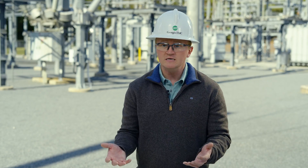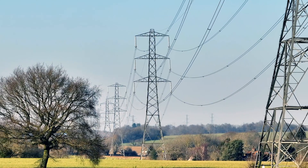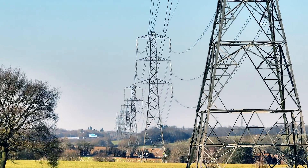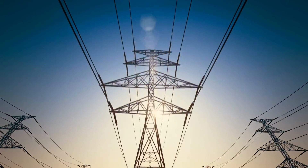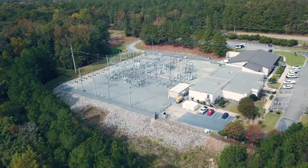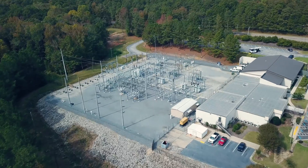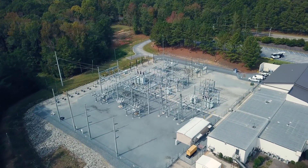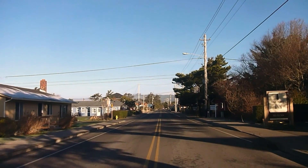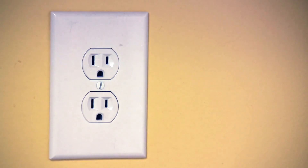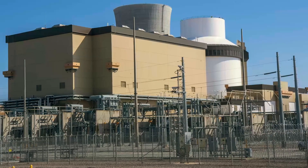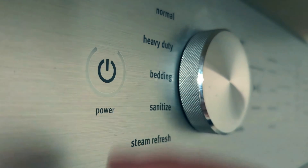When electricity is generated, it's transported across giant electrical lines — the giant wire structures you probably see driving down the road — at tens or hundreds of thousands of volts. It then travels to a substation where it is brought down to typically less than 10,000 volts. From there, power is directed to the transformers right outside your home, and then into your home to power your appliances. The same electricity that starts at the power plant is what powers your home.